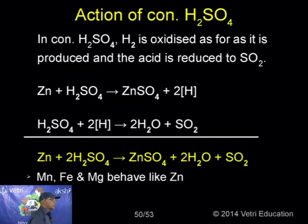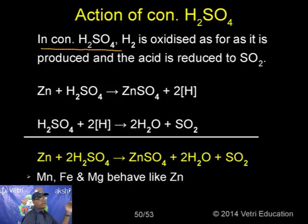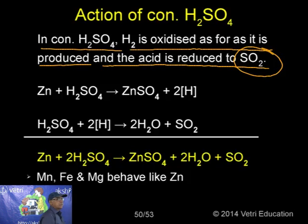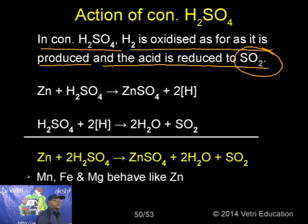For concentrated sulphuric acid, hydrogen produced is immediately oxidized and the acid is reduced to SO₂. So the final products are metallic sulphate, water, and SO₂ — no hydrogen is liberated. For example: Zn + 2H₂SO₄(conc.) → ZnSO₄ + 2H₂O + SO₂. The same applies to manganese, iron, and magnesium with concentrated sulphuric acid.